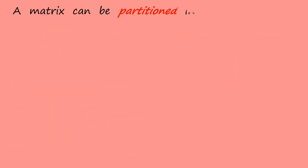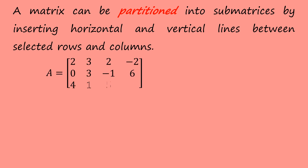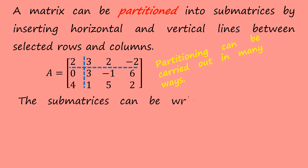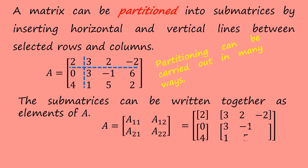A matrix can be partitioned into submatrices by inserting horizontal and vertical lines between selected rows and columns. Let's consider this 3 by 4 matrix. We can insert a vertical line between the third column and the fourth column, and also a horizontal line between the second row and the third row. We can also put a vertical line between the first column and the second column, and a horizontal line between the first row and the second row. Partitioning can be carried out in many ways, and these submatrices can be written together as elements of A.